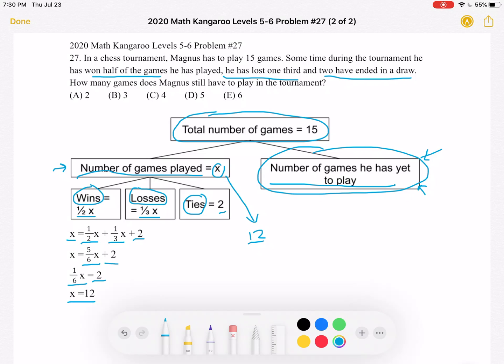And we know 12 plus something must be 15. So in order to find out what that something is, we can do 15 minus 12, which is equal to three. He has three games left to play.